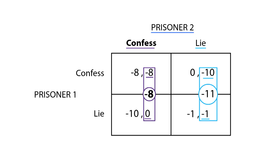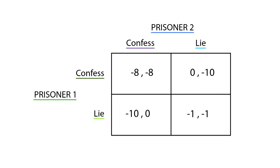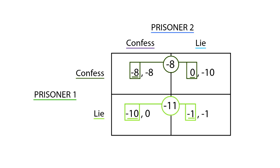Therefore, Prisoner 1 must choose the best strategy given that Prisoner 2 will choose to confess. Prisoner 1 can either confess, which pays negative 8, or lie, which pays negative 10. The rational thing to do for Prisoner 1 is therefore to confess. Proceeding inversely, we analyze the beliefs of Prisoner 2 about Prisoner 1's strategies, which gets us to the same point.